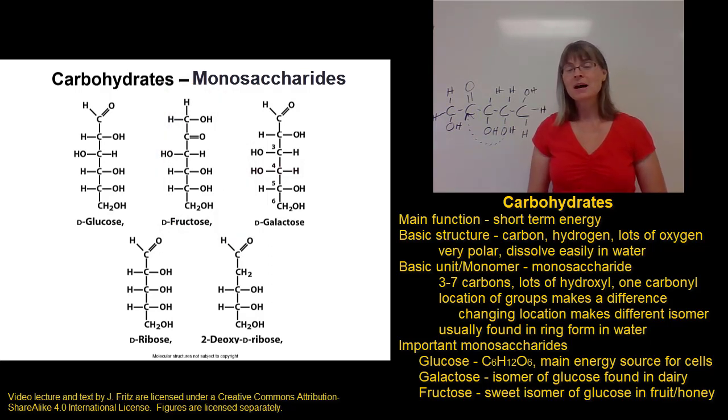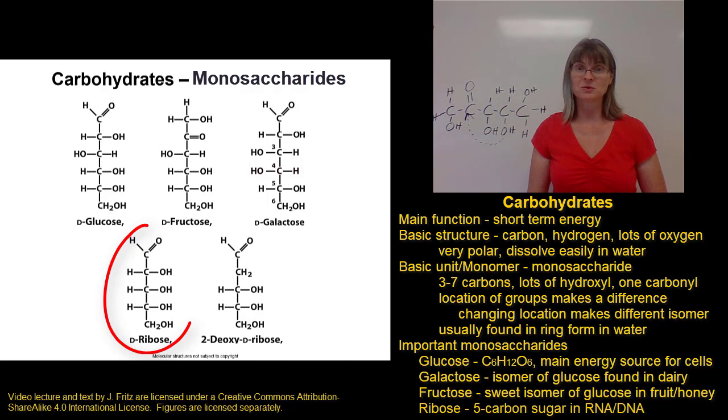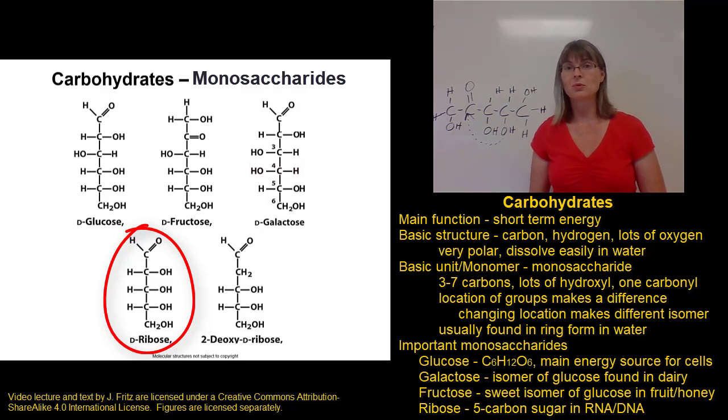The last monosaccharide I want to point out is not an isomer of glucose. It's actually a shorter sugar. It has a molecular formula of C5H10O5, and that is the sugar ribose. The reason ribose is important is because ribose is a component of our nucleic acids. Those would be the RNA and DNA that we find in our cells. Without ribose, we don't have RNA and DNA, and our cells would definitely not work.